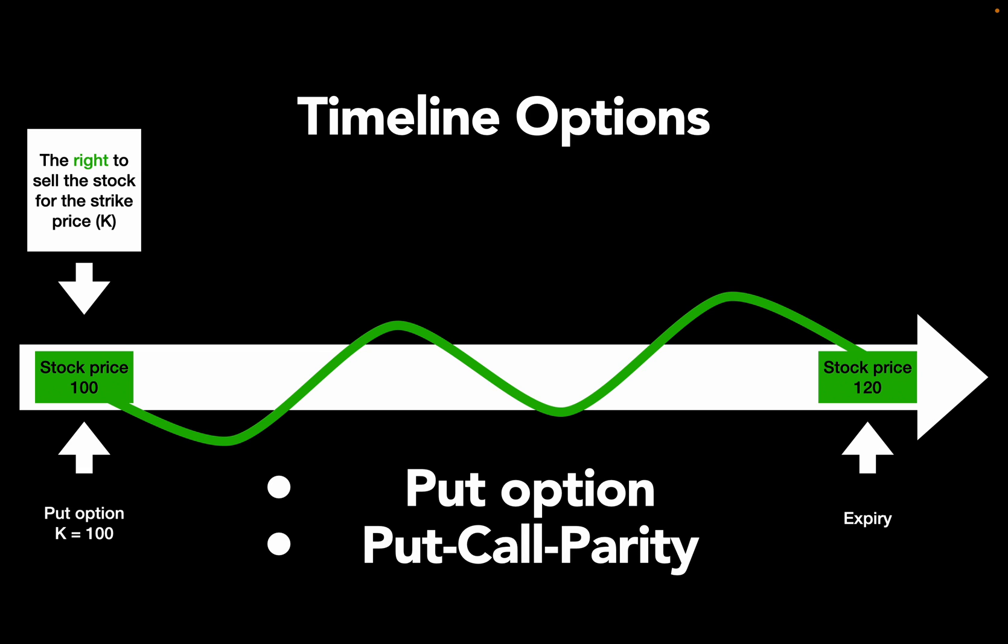An option as a recap is the right and not the obligation to buy or sell a certain underline. This time we are considering a put option, that is the right to sell an asset for an agreed price K, in this example 100 US dollar. This price is called the strike price.